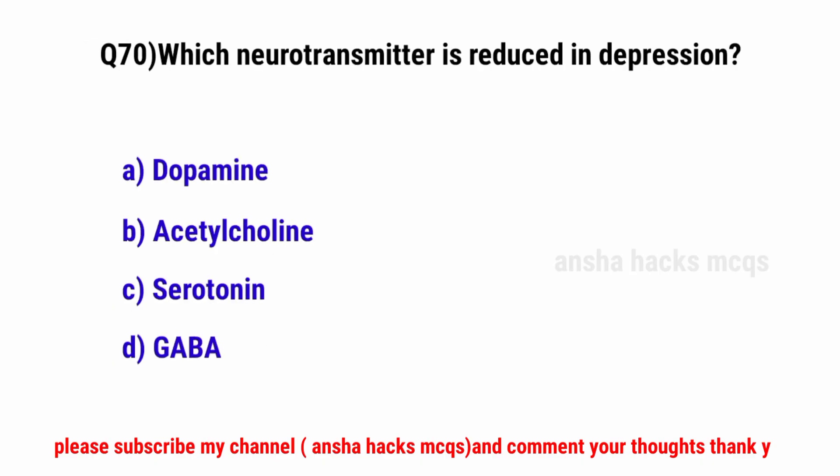Question No. 70. Which neurotransmitter is reduced in depression? The correct option is C: Serotonin.